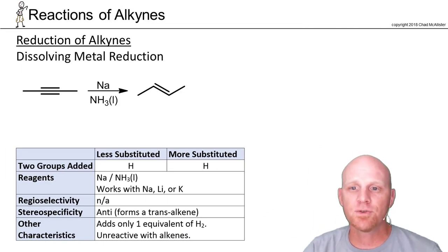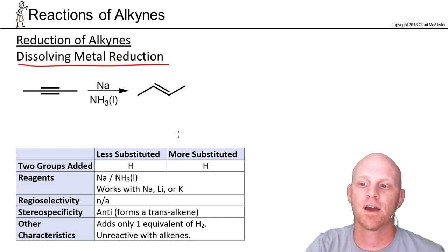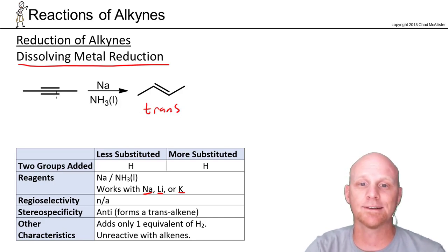The alternative to using the poisoned catalyst and forming a cis alkene is called dissolving metal reduction, and we will form a trans alkene instead. The most common set of reagents here is sodium in liquid ammonia, but instead of sodium you might also use lithium or potassium in liquid ammonia. Dissolving metal reduction forms a trans alkene because it follows a completely different mechanism than the syn additions with H2 and a catalyst.